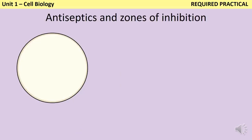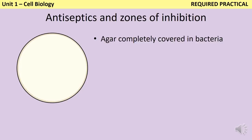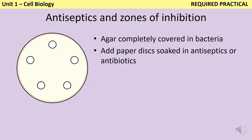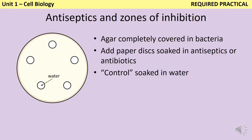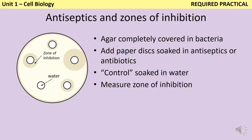The zone of inhibition test determines the antimicrobial properties of antibiotics, chemical antiseptics, and even natural antiseptics like garlic. Rather than a streak plate, you use an agar plate totally covered with a bacterial culture. Each antiseptic is introduced on a small paper disc soaked in that chemical, and one disc soaked in water acts as a control — like a placebo — so we can confirm the bacteria didn't die just from a wet piece of paper. We then measure the area around each disc where no bacteria are growing; this is the zone of inhibition, and the bigger it is, the better the antiseptic works.